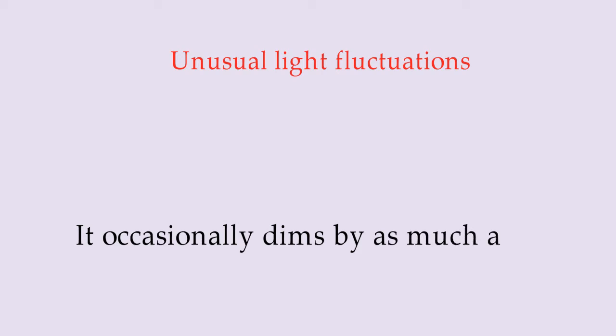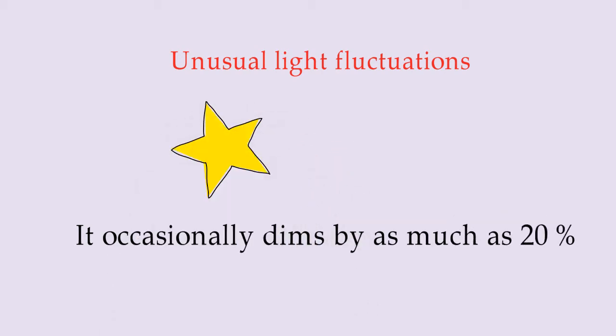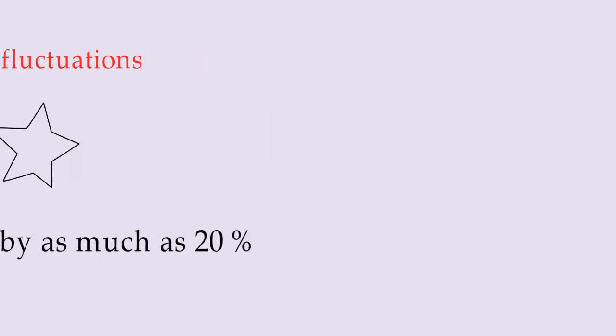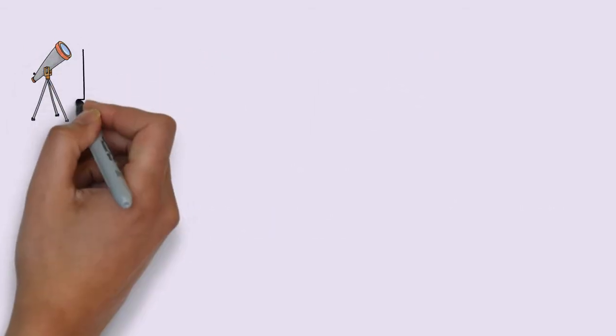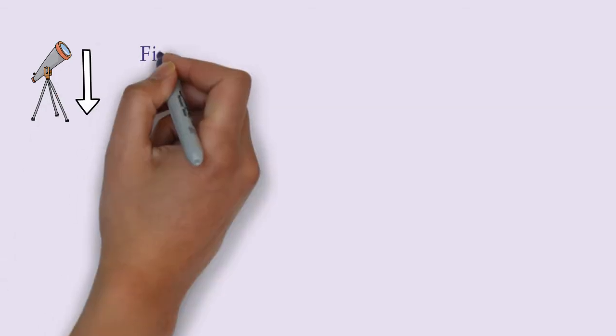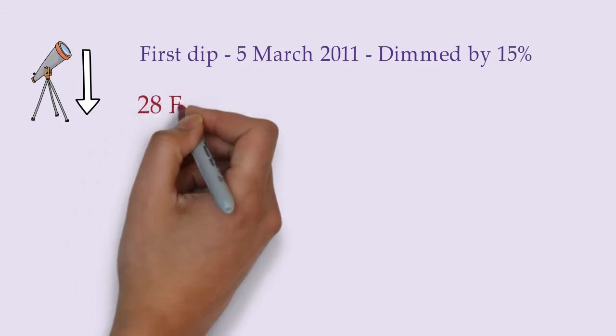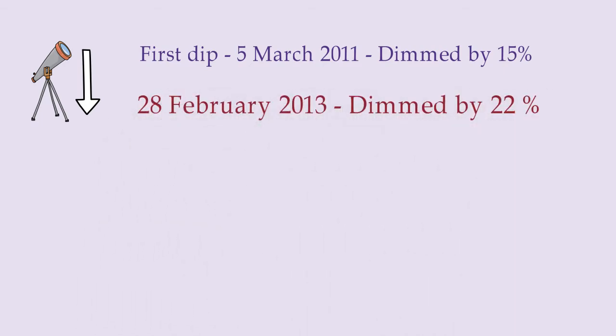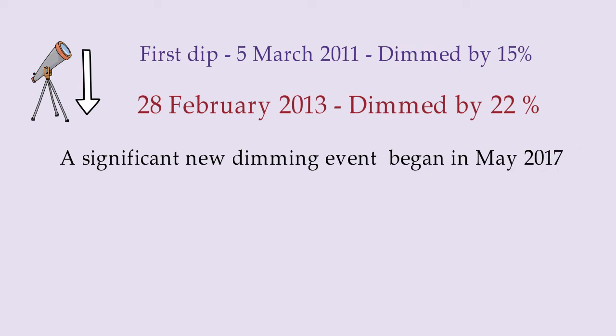This star caught the astronomer's attention when they observed that this star was undergoing unusual light fluctuations. It occasionally dims as much as by 20%. When the astronomers pointed the telescopes toward the star, they noticed that the light coming from the star was dipping in its intensity. The first dip was observed on 5 March 2011 when it dimmed as much as by 15%. The second dip was observed on 20 February 2013 when it dimmed by 22%. More recently, a significant new dimming event began in May 2017.